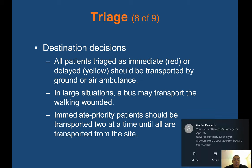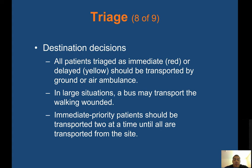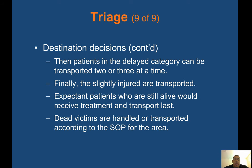Destination decisions: all patients triaged as immediate red or delayed yellow should be transported by ground or air ambulance. In large situations, a bus may transport the walking wounded. Immediate priority patients should be transported two at a time until all are transported. Then delayed category patients may be transported two or three at a time. Finally, expectant patients still alive receive treatment and transport last. Dead victims are handled or transported according to the SOP for that area and county.